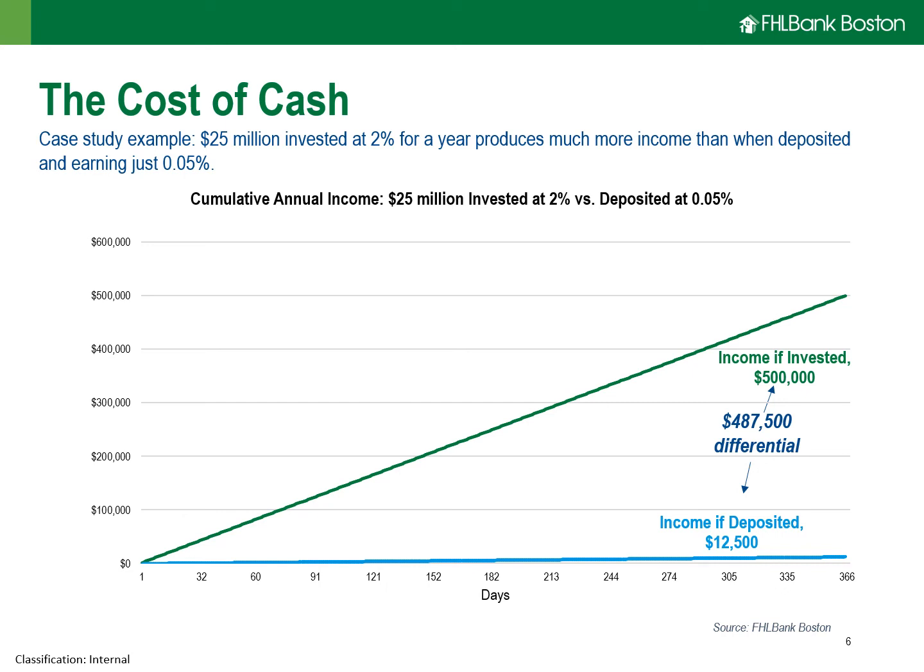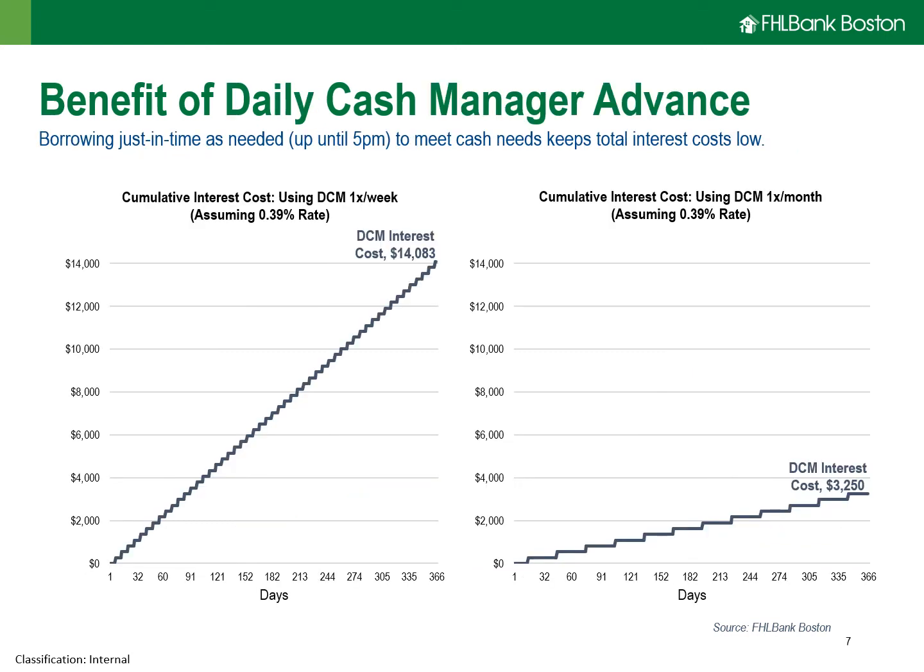Obviously, there is a liquidity component to investing further out the curve into investments with varying degrees of liquidity versus holding in cash. But we're going to show how liquidity needs may be met efficiently through advances. By deploying the excess cash into securities at a yield of 2%, that's substantially more than what would be attainable by holding cash-like instruments. There is a liquidity give-up by investing that principal, so let's look at an example where a member might use the Daily Cash Manager advance to meet some of those intermittent liquidity needs.